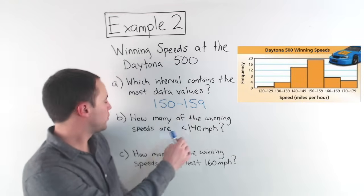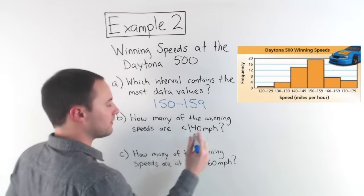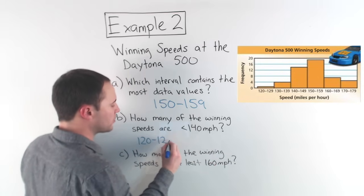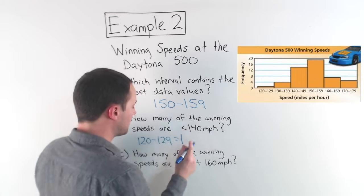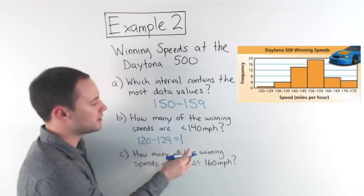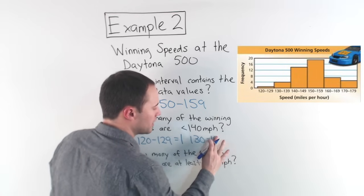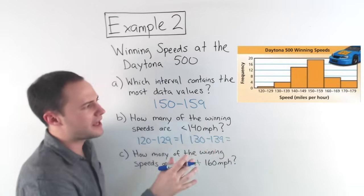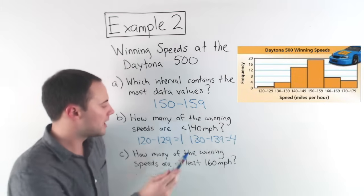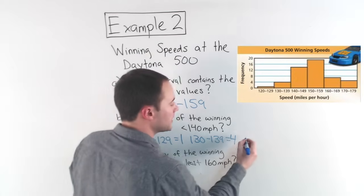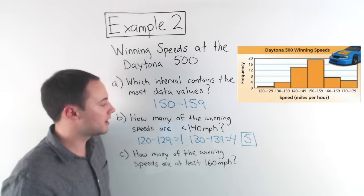Okay. And part B, how many of the winning speeds are less than 140 miles per hour. So if we look, let's see for 120 to 129 miles per hour. In that interval, there was only one winning speed. It's pretty slow for the Daytona 500. And then let's see from 130 to 139. In that interval, let's see, there were four winning speeds in that interval. And let's see, one plus four, that would give us five total winning speeds that were less than 140 miles per hour.